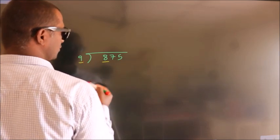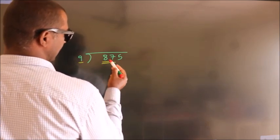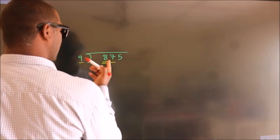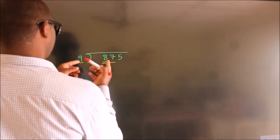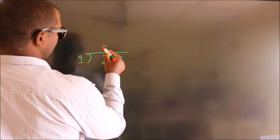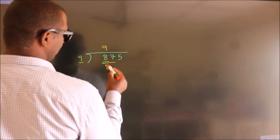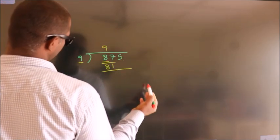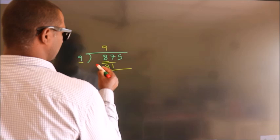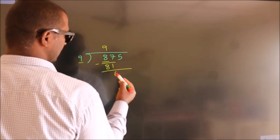So we should take two numbers, 87. A number close to 87 in 9 table is 9 nines, 81. Now we should subtract, we get 6.